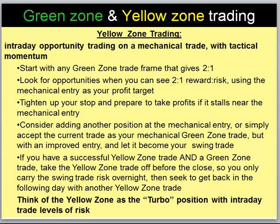Think of the yellow zone trade as the turbo position that's carrying intraday trade levels of risk. Whereas on the overnight frame you might have a dollar per share of risk, you might be able to manage something like 10 or 15 cents intraday, and so you could have a correspondingly large position size or the same position size with much fewer dollars at risk. Basically you want to make sure that you're only carrying overnight as much risk as is appropriate for a swing trade, which is usually that first original frame that we set up.